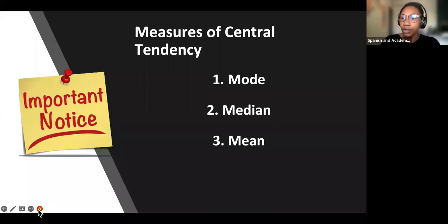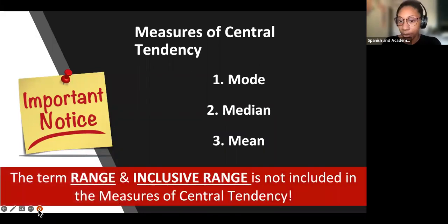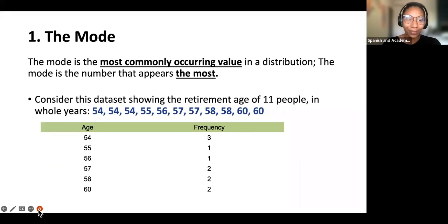The measures of central tendency are the mean, median, and mode, but it's also important to note which things are not the measure of central tendency, such as range and inclusive range. That could show up on your exam. Which one of these answer choices are not a measure of central tendency? And that would be range and inclusive range.